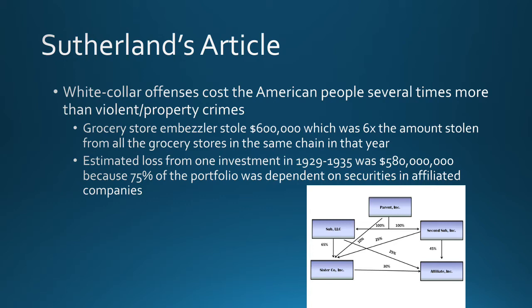Sutherland also talks about how white-collar offenses cost the American people several times more than violent and property crimes. For example, he points to a grocery store embezzler who stole $600,000 — six times the amount stolen from all grocery stores in the same chain in that year. One executive embezzling money cost the grocery store more than every single person who tried to steal from that entire grocery store chain in the whole year. One crooked executive. That's huge.